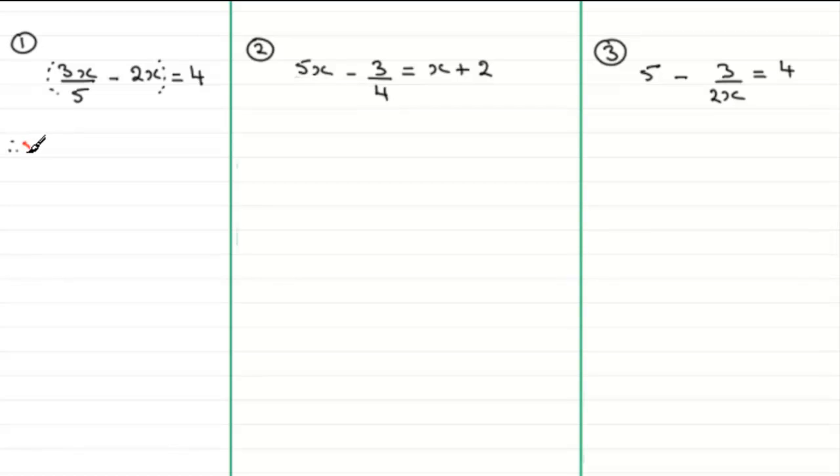We'll just do this in red: five, then multiplied by the 3x over five. And then we've got minus five times the next term, the 2x. So five times the 2x, and then this is going to equal five times the right hand side, and on the right hand side we've just got the four. Okay, so we're doing the same thing to both sides, multiplying both sides by five.